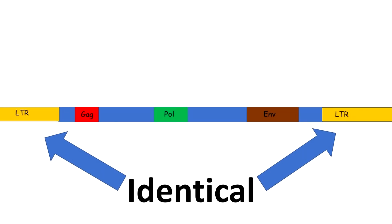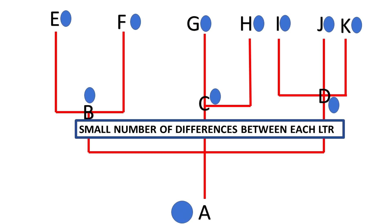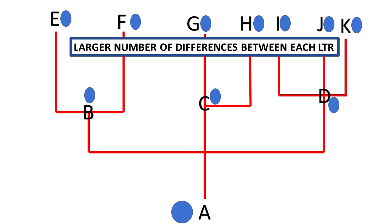On either side of every single ERV insertion are what we call long terminal repeats, represented in yellow here. These are very long, repeated nucleotide sequences, identical on each side of the insertion. However, as time passes, mutations affect each long terminal repeat differently, so they become more and more unlike each other. Evolution predicts that insertions found in recent common ancestors will have nearly identical long terminal repeat sequences, while organisms that diverged further back will have more differences between them — and that's exactly what we see with genetic analysis.